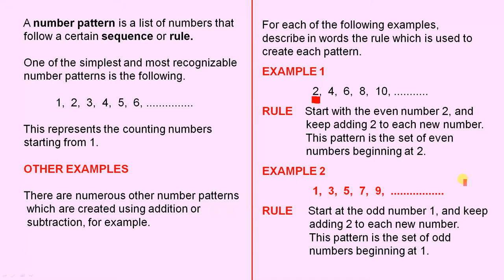Example 2: 1, 3, 5, 7, 9. The rule: Start at the odd number 1, and keep adding 2 to each new number. 1 plus 2 is 3, 3 plus 2 is 5, 5 plus 2 is 7, 7 plus 2 is 9, and so on. This pattern is the set of odd numbers beginning at 1.